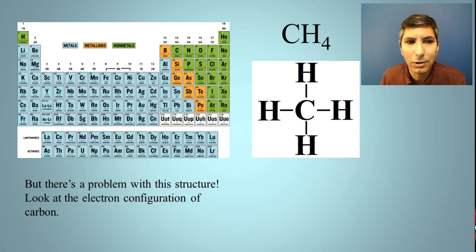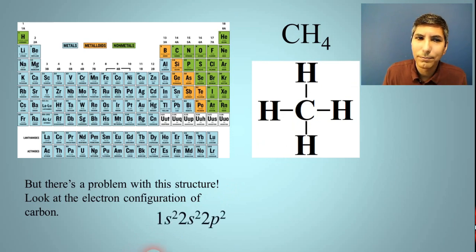Now, what could be wrong with this structure? Well, let's think about the electron configuration of carbon. Carbon is there in the middle. It has four valence electrons. That's the electron configuration of carbon. And the valence electrons are the only ones that are participating in the bonding. So, the ones we care about are the 2s2 and the 2p2 electrons.